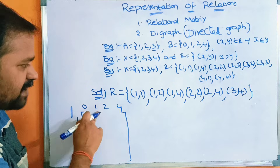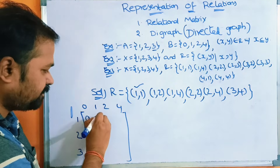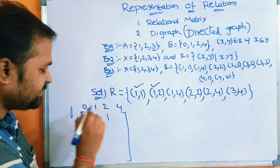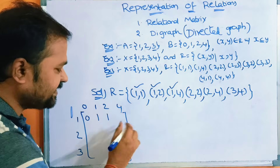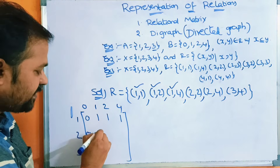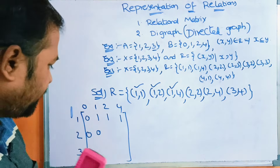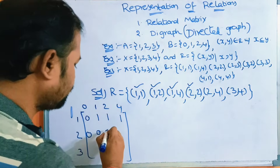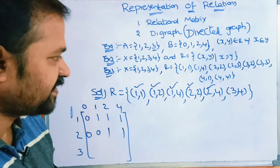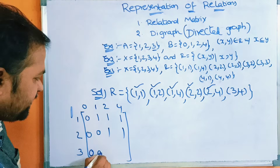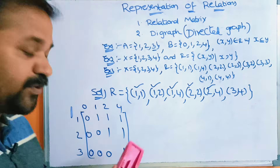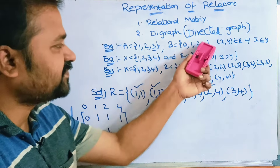For (1,1): present in the relation, matrix element is 1. For (1,2): present, matrix element is 1. For (1,4): present, matrix element is 1. For (2,0): not present, matrix element is 0. For (2,1): not present, matrix element is 0. For (2,2): present, matrix element is 1. For (2,4): present, matrix element is 1. For (3,0), (3,1), (3,2): not present, matrix element is 0 for each. For (3,4): present, matrix element is 1. This is the complete relational matrix.